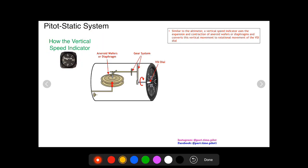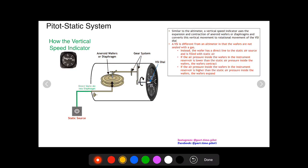So how does it work? Well, it looks just like an altimeter in that it's got an aneroid wafer or diaphragm that expands and contracts, spinning a gear system which then spins the dial on the face of the instrument. It's different than the altimeter in that the altimeter had a gas—these aneroid wafers or diaphragms were completely sealed with gas at sea level pressure inside. In the VSI, the static source goes directly into the diaphragm. So inside the diaphragm you have static air.